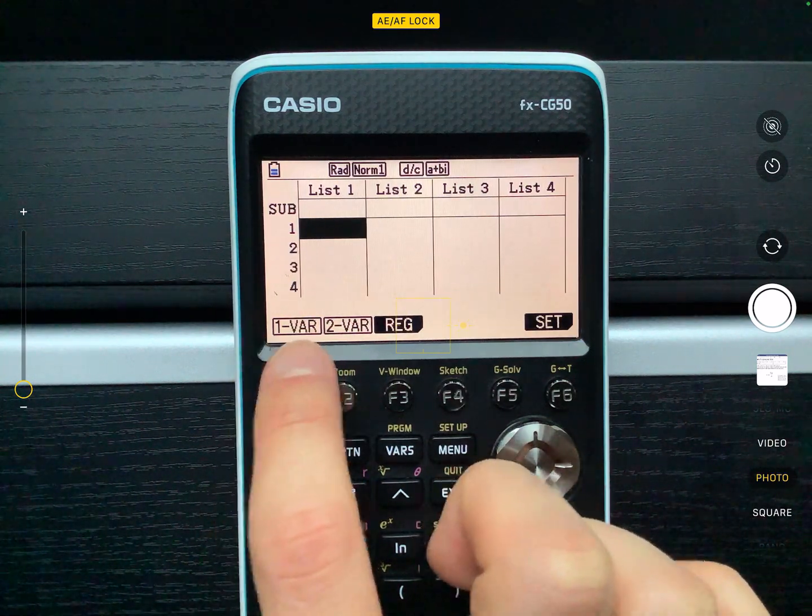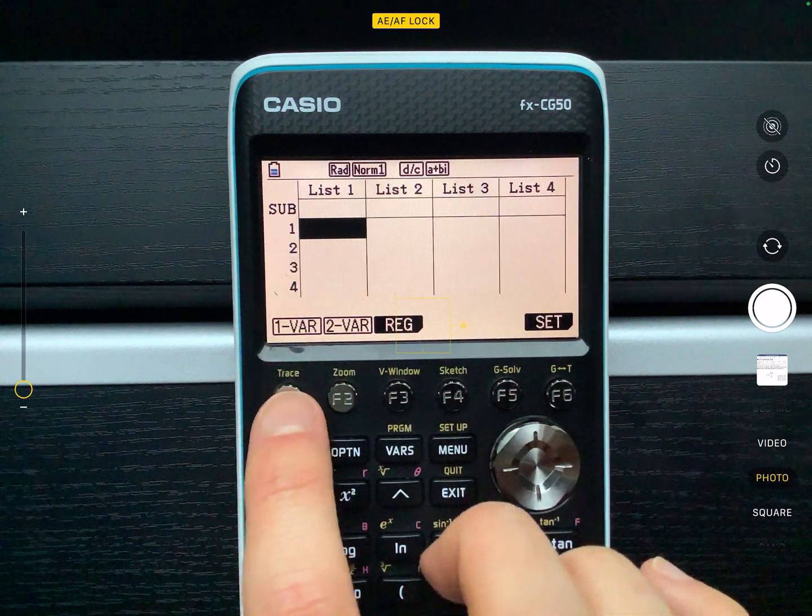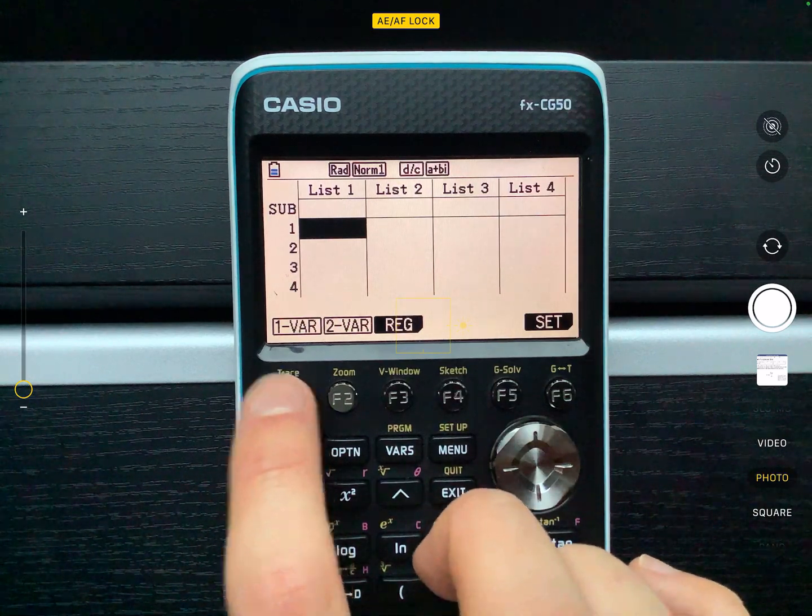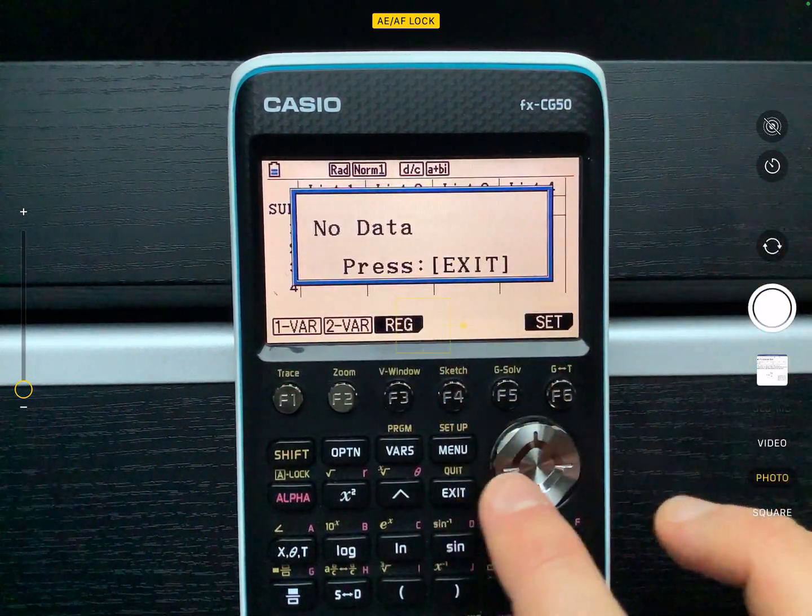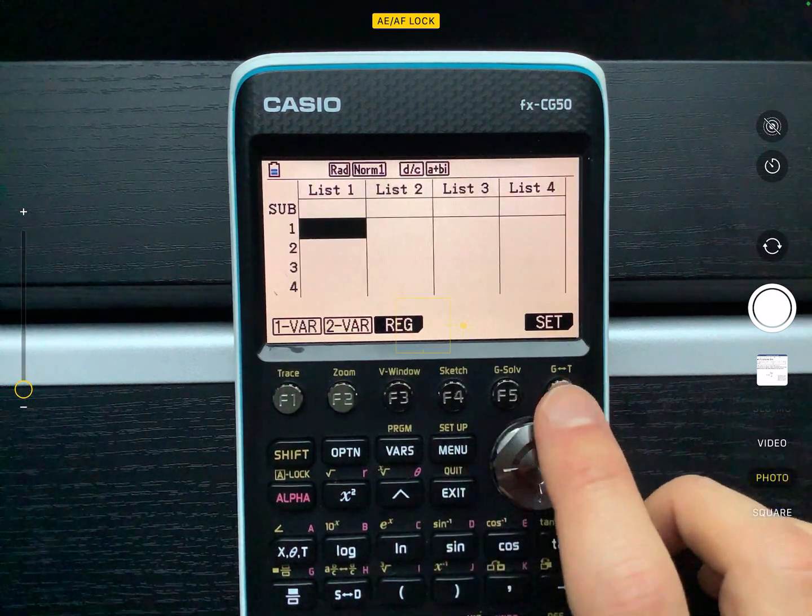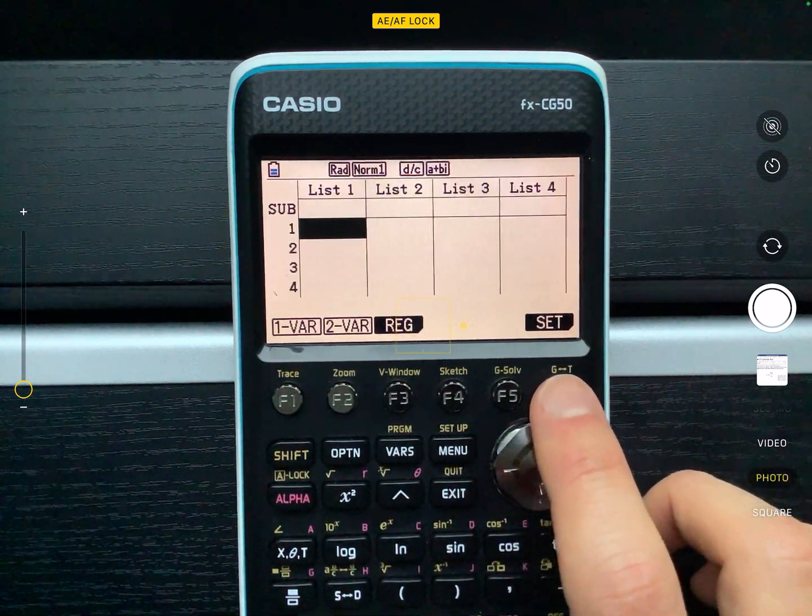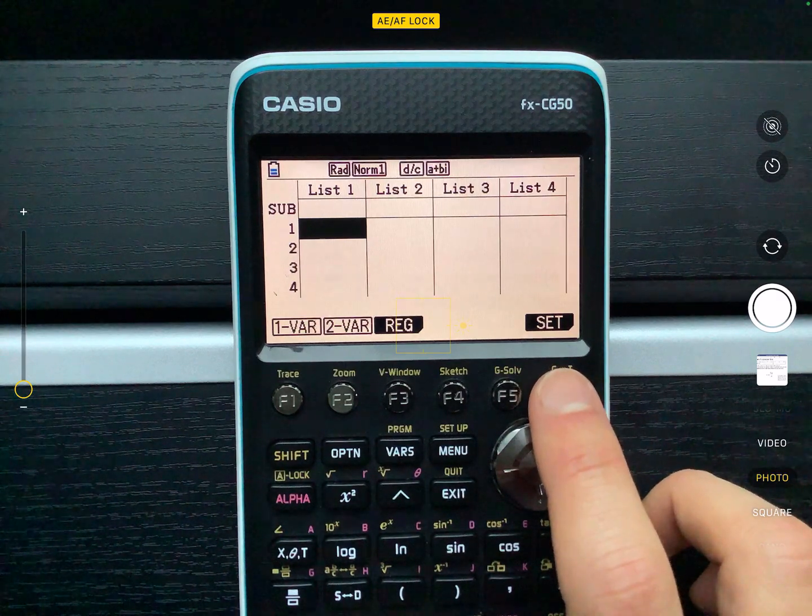And the first thing I want you to do is to go to the calculator button, which is F2. And we're doing one var. One var stands for one variable because we're only talking about the diameters of the coin here. So it says no data. What you have to do is you go to set so that it understands what you're trying to input.